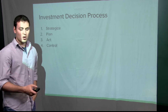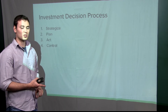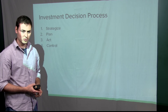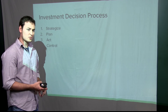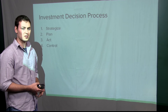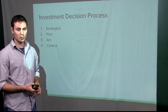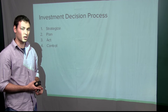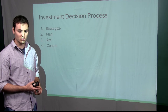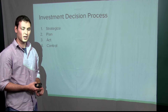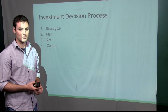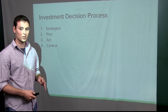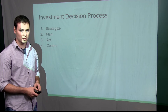The process starts off with developing our strategy — what are our long-term goals? The second phase is the planning process. Within this planning process, we first identify what our investments could be, then we analyze our possible investments. During this analysis stage is when we use the four common measures.